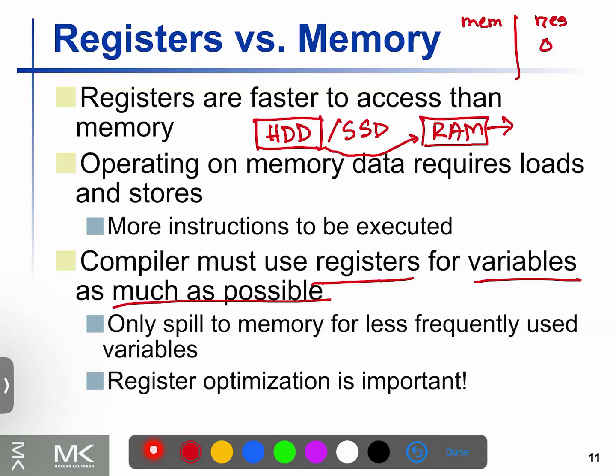Memory retrieve is 0.01 seconds — the data retrieval time is very low. But if you look at the data, the data is 1000 times — so the data retrieval takes 0 seconds while memory is 0.01 seconds. That is 10 seconds — a clear and very distinctive difference.